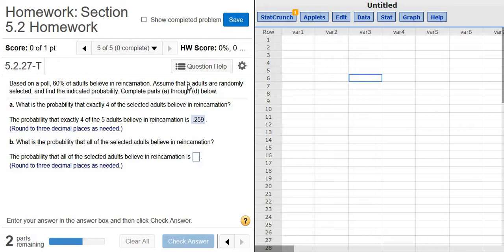And they're giving us n, which is 5, that's the number of trials. So to do this problem, we'll use the binomial calculator.